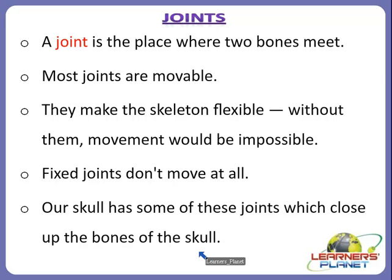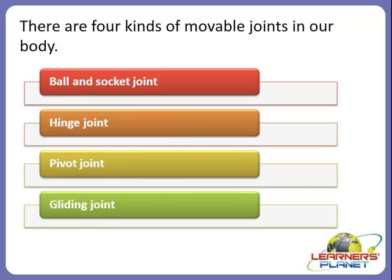Movable joints let us ride a cycle, let us eat, let us play — they allow us to twist, bend and move the different parts of our body. Some movable joints, like the ones present in our spine or backbone, move only a little, while other joints move a lot.